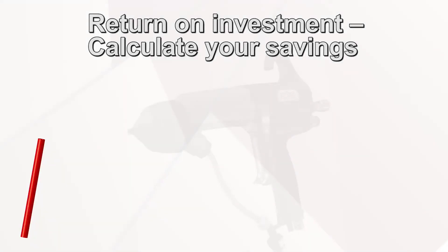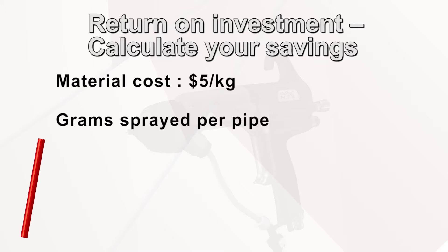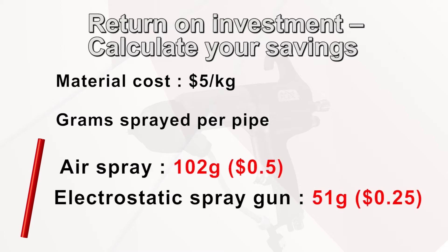This chart represents how much you can save when you replace air spray gun with electrostatic spray gun. If material is 5 US dollars per kilogram, it costs you 50 cents with air spray gun, 25 cents with RansFlex for this pipe.